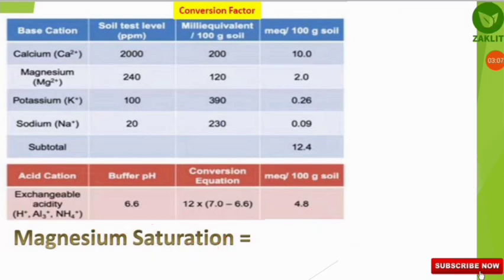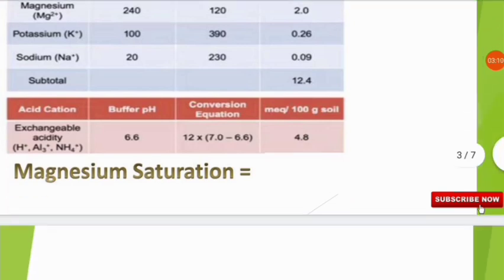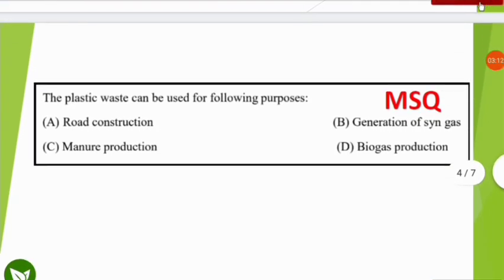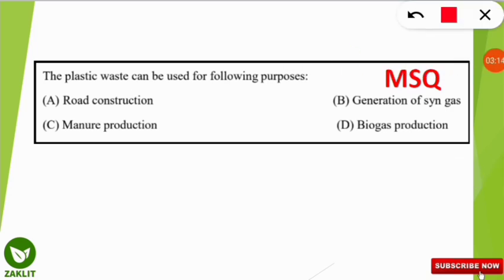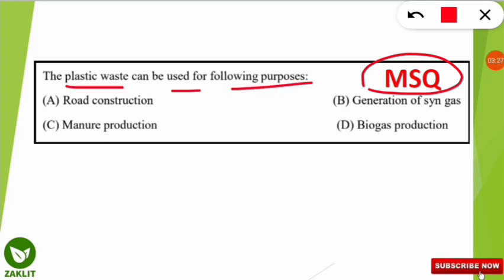Now we'll do some important questions taken from the sample paper of GATE environmental science and engineering. This question is MSQ, that is multiple select question, so more than one option can be correct. The question is: plastic waste can be used for which of the following purposes?